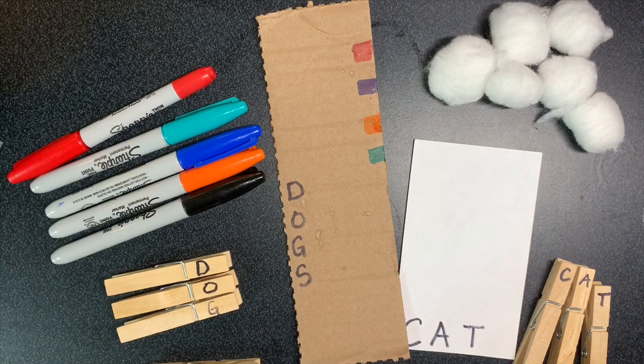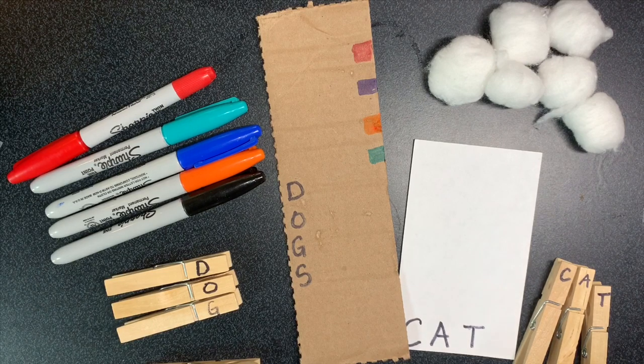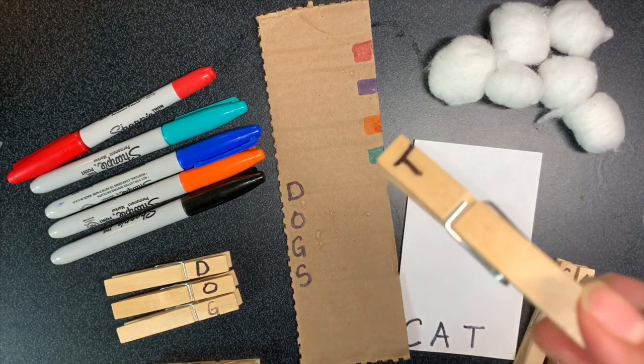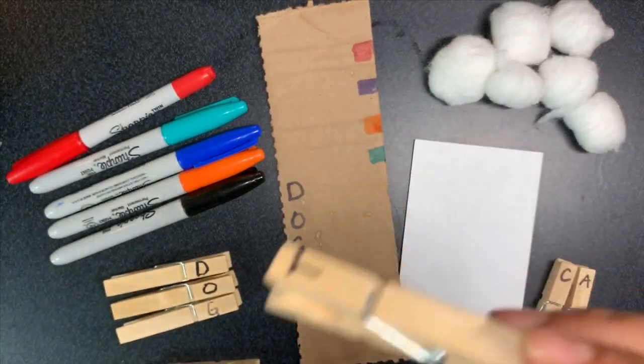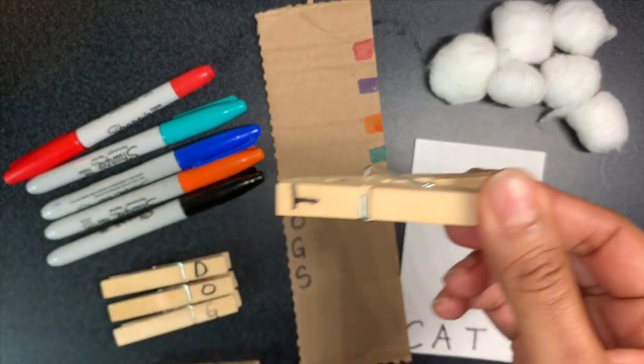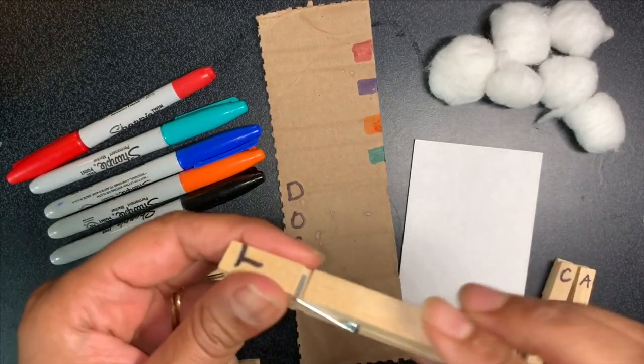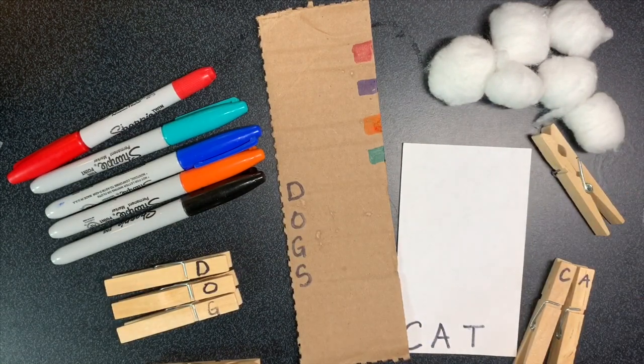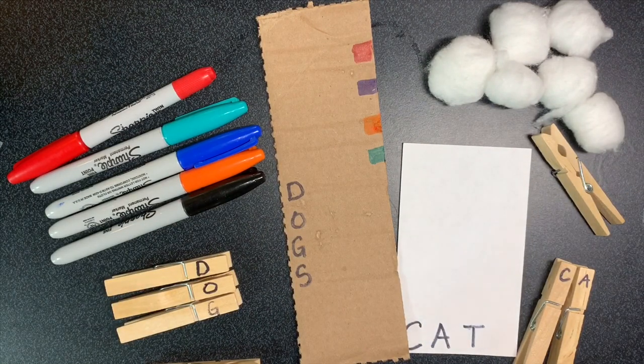With clothespins you can encourage pinch strength and tip to tip, which is the index finger on top and the thumb on the bottom, the lateral pinch where the thumb is on the top, or the tripod pinch which then eventually is great for holding a pencil and doing other fine motor activities.